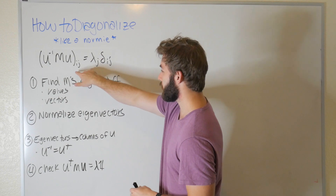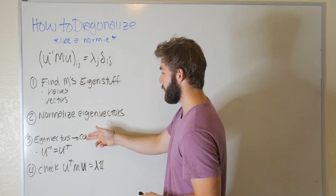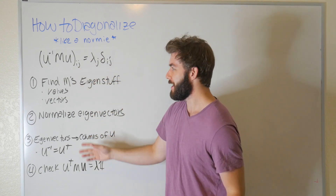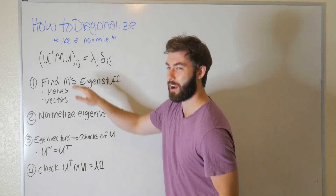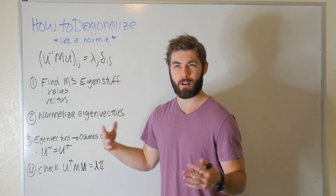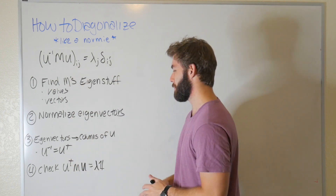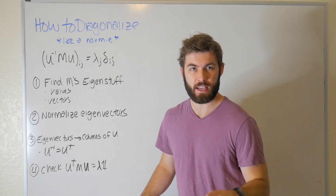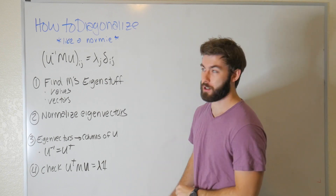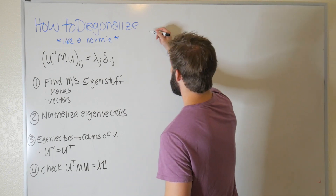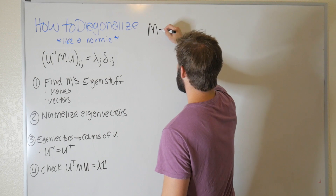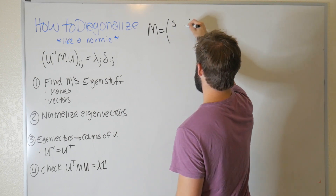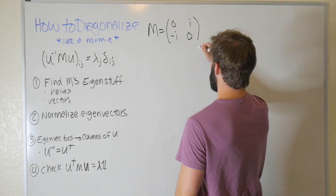The way we're going to get to this is by following a step-by-step procedure — which is normally not how I do things; I normally show why this works first. But I wasn't sure if people would be interested in seeing the proof. Let's go ahead and start off by picking a matrix M that we want to diagonalize. We're going to let M equal [[0, i], [-i, 0]].